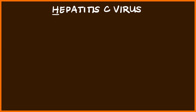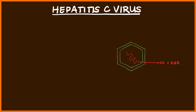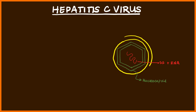Hey everyone, today we're going to talk about the hepatitis C virus, and as always, let's begin by looking at the structure. The hepatitis C virus genome contains just a single-stranded, non-segmented, positive sense RNA, and this genome is contained within a hexagonal structure called the nucleocapsid. The nucleocapsid is then surrounded by another structure, which is the envelope. So comparatively simple structure compared to other viruses.